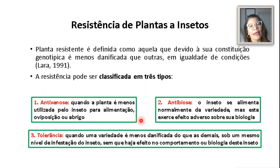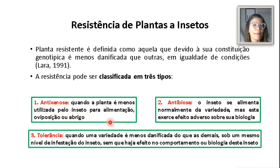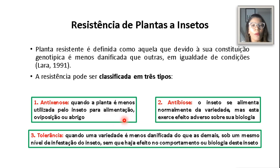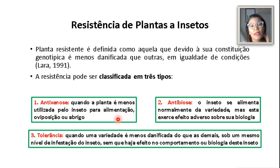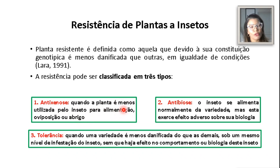Para isso, a planta vai emitir substâncias que vão atrair ou repelir esse inseto. Quando ela repele — seja por uma estrutura morfológica como uma epiderme mais espessada ou um tricoma, ou pela emissão de aleloquímicos, que são substâncias resultantes do metabolismo secundário dessas plantas —, esse inseto é repelido e, consequentemente, essa planta vai ser menos utilizada por ele para alimentação, oviposição ou abrigo.